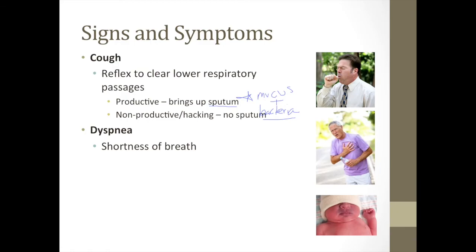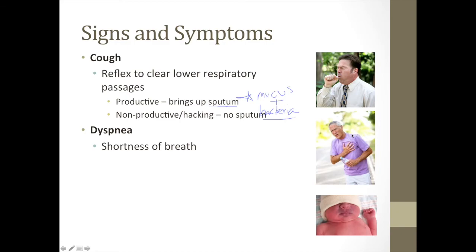Dyspnea is Latin for air hunger or shortness of breath. If it's difficult to breathe, if there's wheezing either bilaterally or on one side in just one field of the lung, it's still a symptom of respiratory distress. The final sign is cyanosis — a bluish appearance of the skin from non-oxygenated hemoglobin. Cyanosis can be seen around the face and lips, which is called central cyanosis. It can be from a respiratory disorder or from a heart disorder.